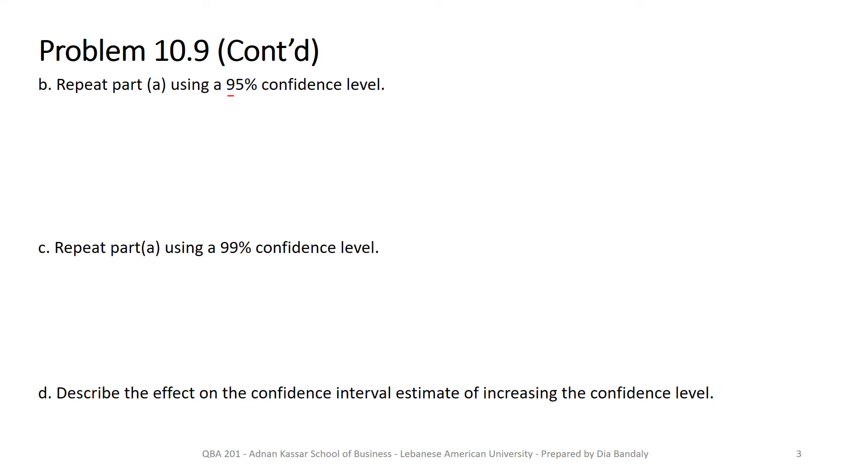Now they will ask us to find a confidence interval with a 95% confidence level. So what that changes—it changes only one element in the calculation for the confidence interval, which is z alpha over 2, right? Because when 1 minus alpha changes, that means alpha over 2 changes, which means z alpha over 2 changes.